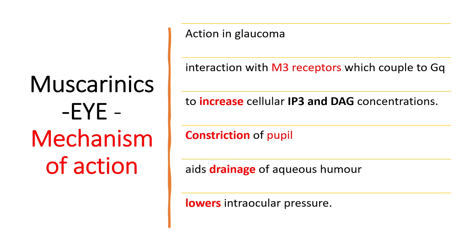To remember: muscarinic agonists interact with the M3 receptor, increasing IP3 and DAG concentrations, which leads to contraction of the circular muscle fibers of the iris. M3 receptors are present on these circular muscles of the iris. Contraction leads to constriction of the pupil, widening the iridocorneal angle, which facilitates drainage of aqueous humor and finally lowers intraocular pressure.